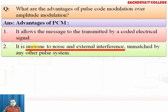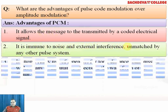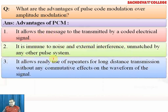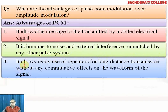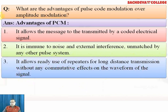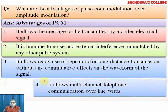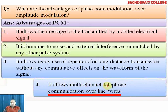PCM is immune to noise — there is no noise and external interference, unmatched by any other pulse system. It also allows ready use of repeaters for long distance transmission, including space transmission, without any cumulative effect on the waveform. During total transmission, the waveform never changes; it remains in the form of a digital signal. It also allows multi-channel telephone communication over line wires.